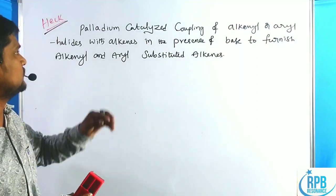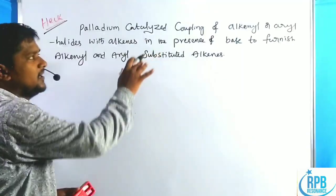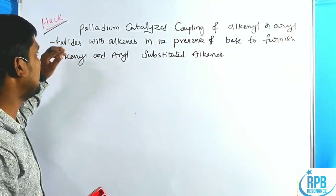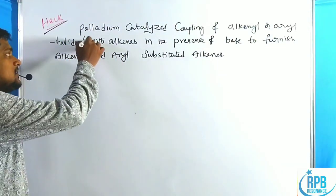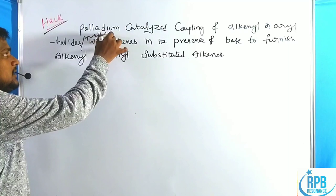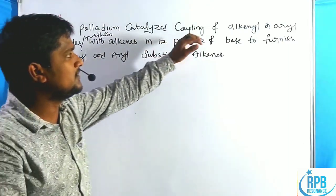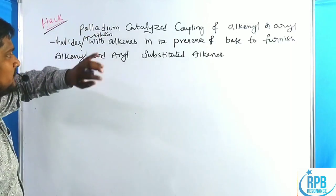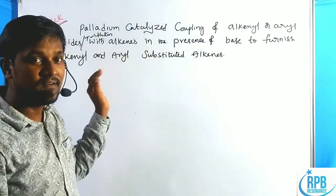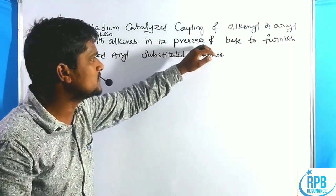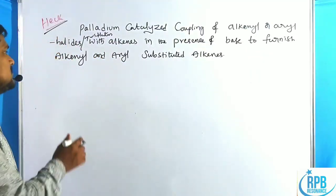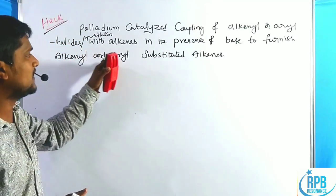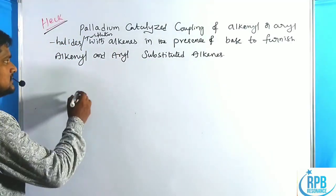The general definition of the Heck Cross-Coupling Reaction is: palladium-catalyzed coupling of alkenyl or aryl halides or triflates — not only halides, but triflates also — with alkenes, in the presence of a base, to furnish alkenyl and aryl substituted alkenes.